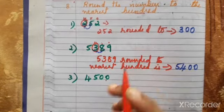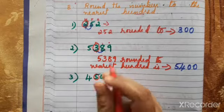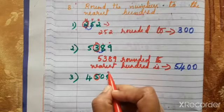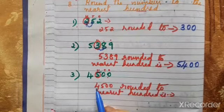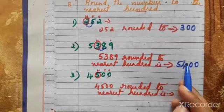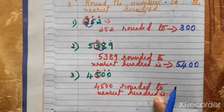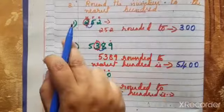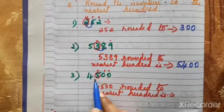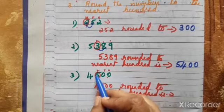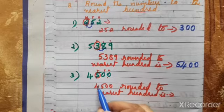Third question: 4500. We have to round 4500 to the nearest hundred. First step — check the place value. One, tens, hundreds — the hundreds digit is 5. Write the question in black pen and the answer in blue pen. After each question and answer, draw a line.